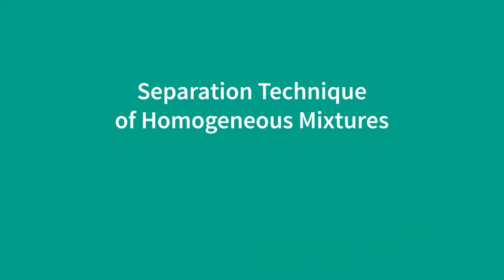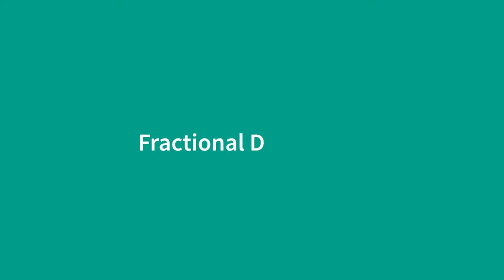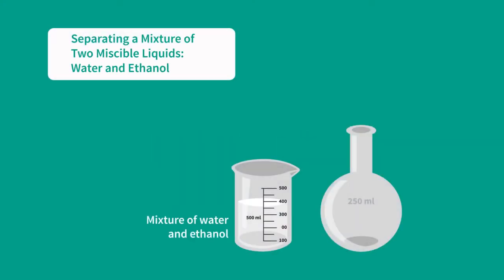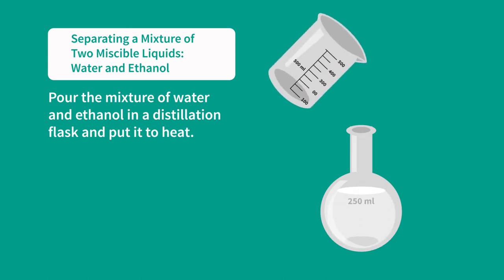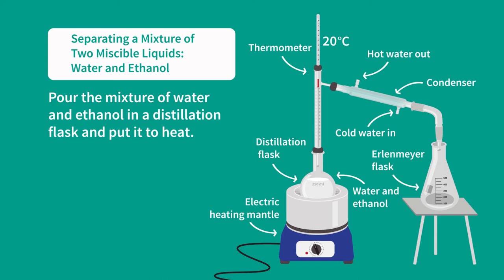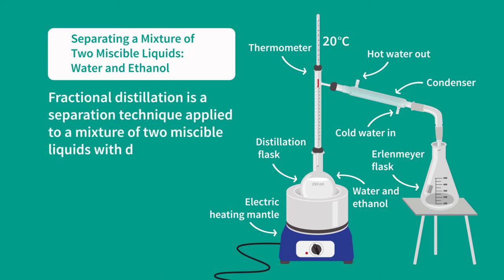Separation technique for homogeneous mixtures: fractional distillation, separating a mixture of two miscible liquids, water and ethanol. Pour the mixture of water and ethanol in a distillation flask and put it to heat.